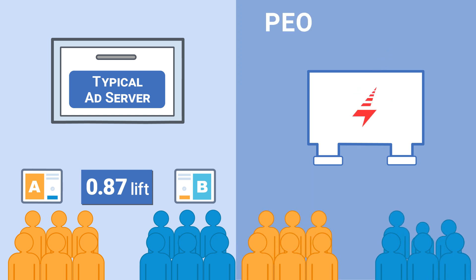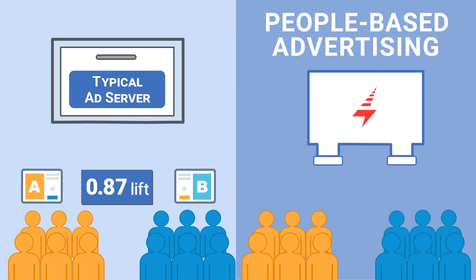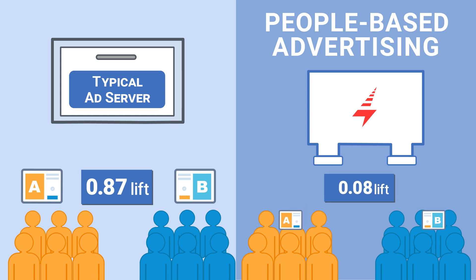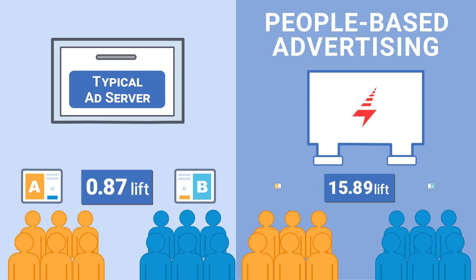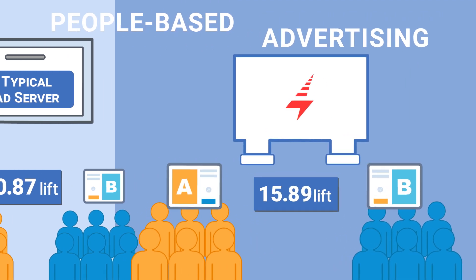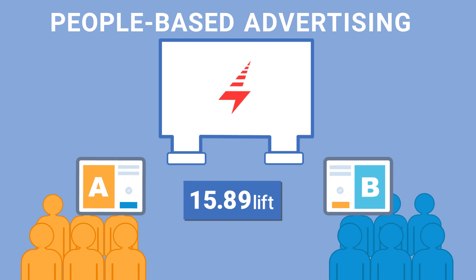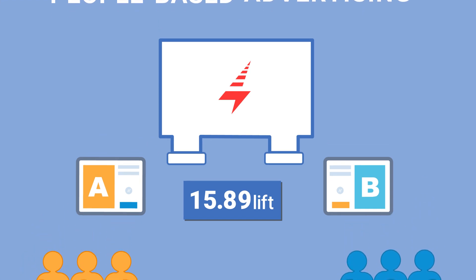By using people-based testing, you can create consistent control and expose test groups split by individuals, regardless of what device they are using. Here's why digital advertisers are switching to Thunder people-based testing for superior A/B test results.